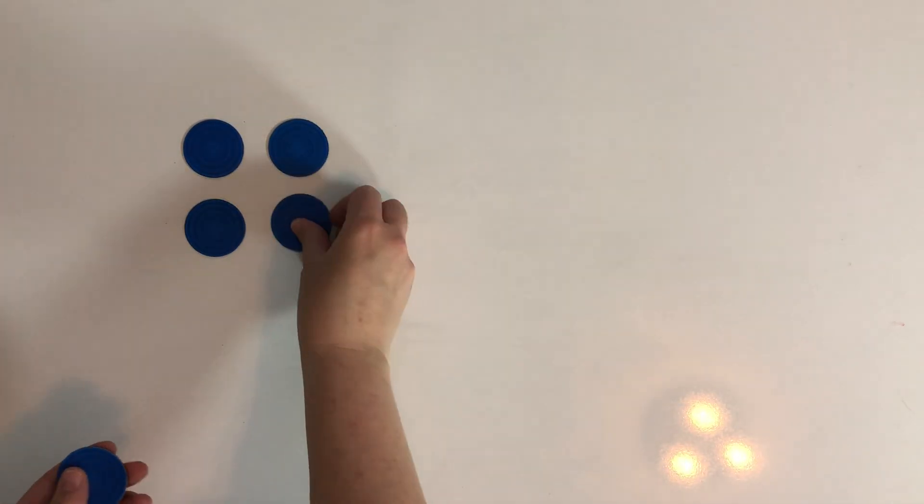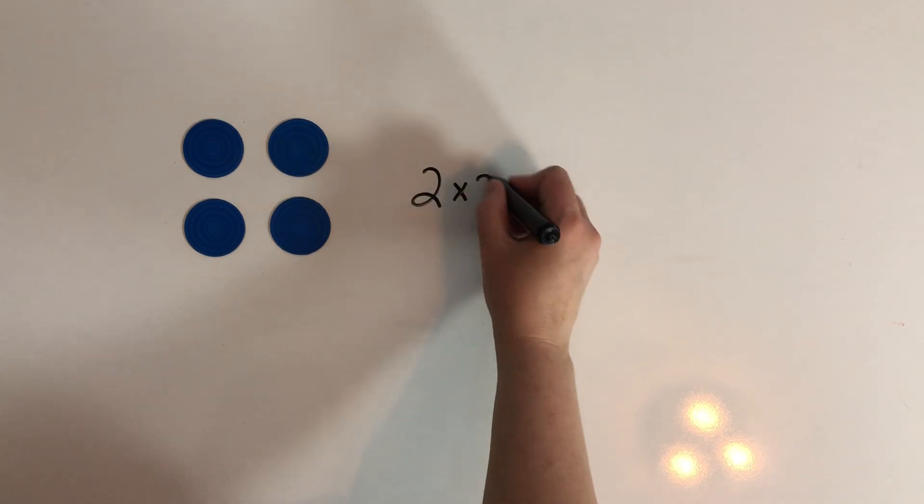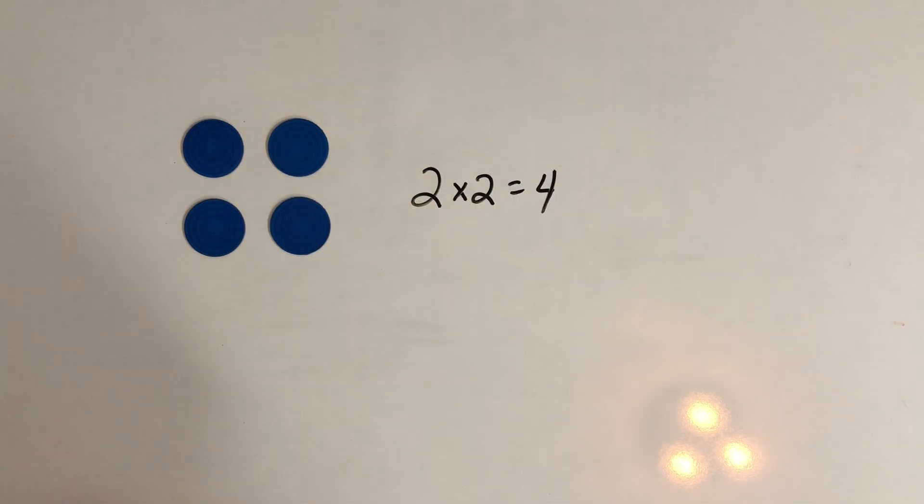Let's look at one more array. Suppose we have two groups of two. So we can write this like this: two groups of two and that makes four.